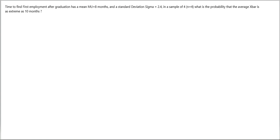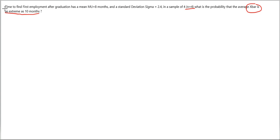The purpose of this example is to figure out how we calculate a probability of something described as 'as extreme as.' Now, my sample size is equal to 4, which is less than 25, so the Central Limit Theorem does not apply. I cannot assume that X̄ has a normal sampling distribution. So either I stop and cannot continue, or I must assume that my variable of interest has a normal distribution. That's what we're going to do — assume the original variable 'time to find first employment' has a normal distribution.